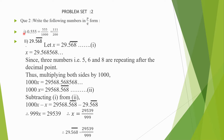The first question is 0.555. Now, this is not a recurring number. We can write 555 upon 1000. So, when we further factorize, we get 111 upon 200.